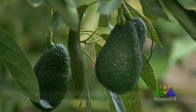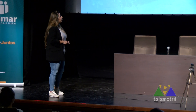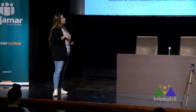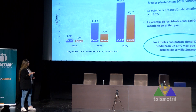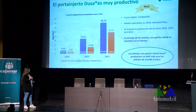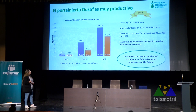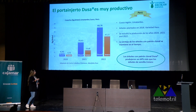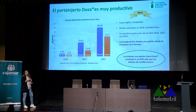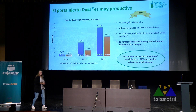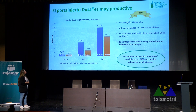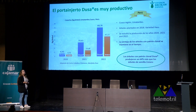Seguimos con los estudios, en este caso en Perú. Árboles plantados en 2018 de la variedad Hass, comparando patrón Dusa con patrón Zutano. La progresión de la producción es muy diferente: el Dusa ya en el primer año produjo más, y conforme va pasando el tiempo la diferencia es mayor. Las producciones son muy altas porque estamos hablando de Perú, no de España. Los árboles con patrón Clonal Dusa produjeron un 64% más que los árboles con patrón de semilla Zutano.